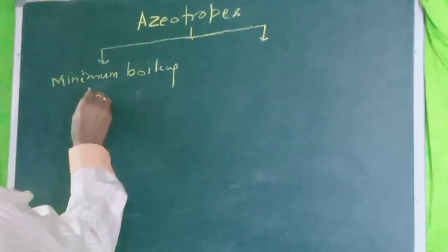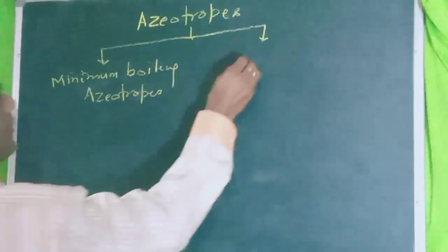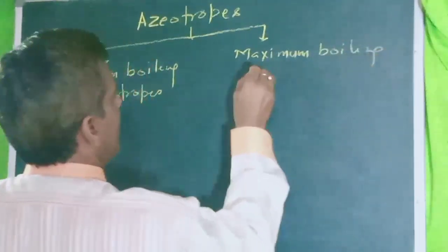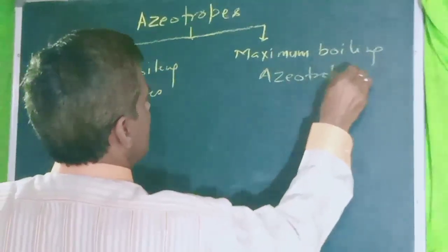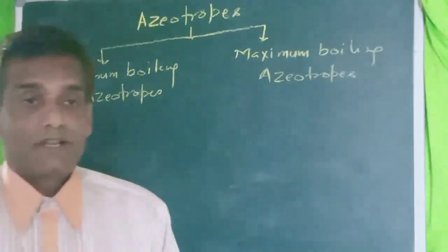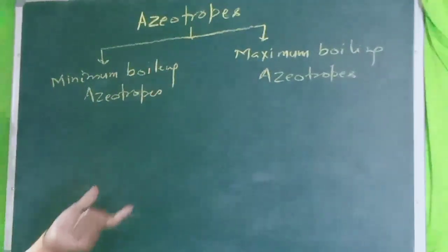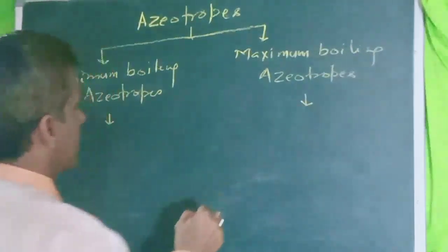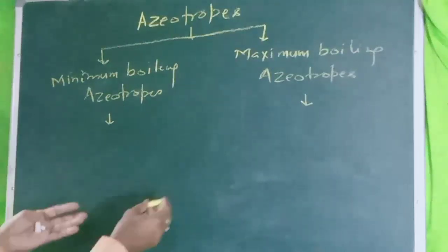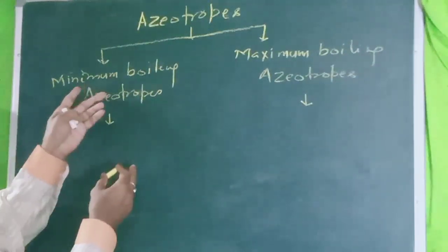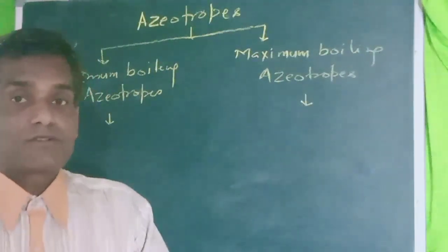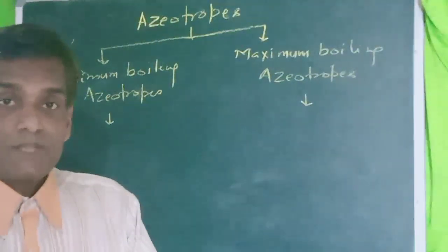Minimum boiling azeotropes or maximum boiling azeotropes — why do they arise? Because they show large deviation from Raoult's law. Minimum boiling azeotropes are the first type: they show large positive deviation from Raoult's law. If we have to memorize: large positive deviation from Raoult's law gives minimum boiling azeotropes.